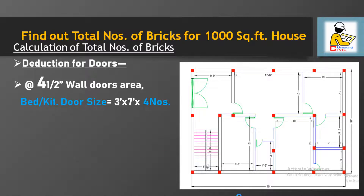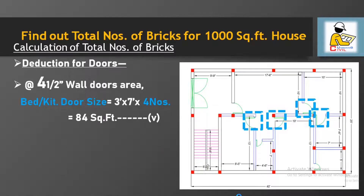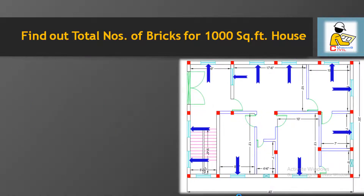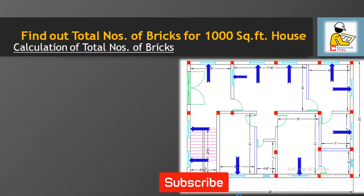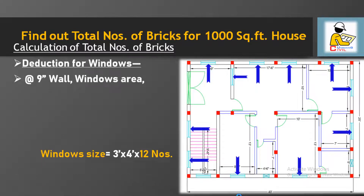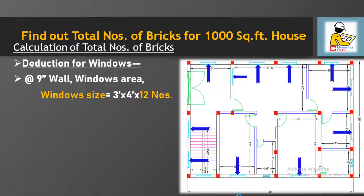For the 4.5 inch wall, we have room doors of size 3 feet by 7 feet — four numbers, total area 84 square feet; and bathroom doors of 2 feet by 7 feet — two numbers, total area 28 square feet. For window deductions in the 9 inch wall, windows of size 3 feet by 4 feet — 12 numbers, total area 144 square feet.